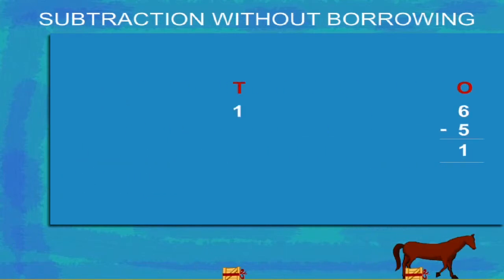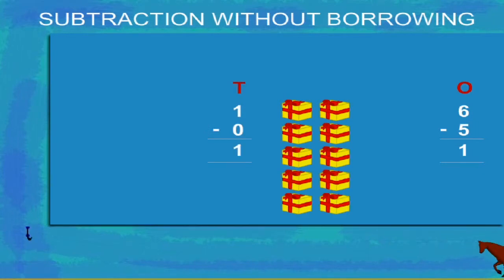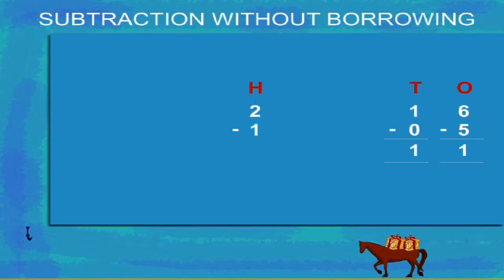Now let's take the tens. 1 tens minus 0 tens is 1 tens. Now, we have 2 hundreds minus 1 hundred is equal to 1 hundred.